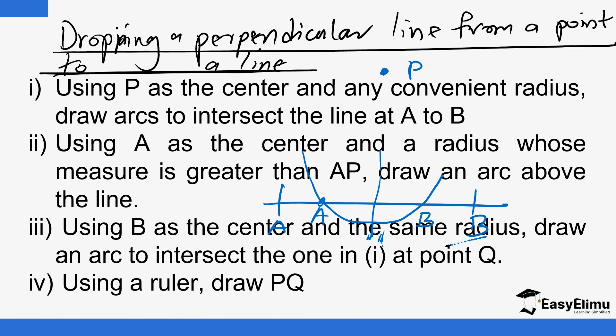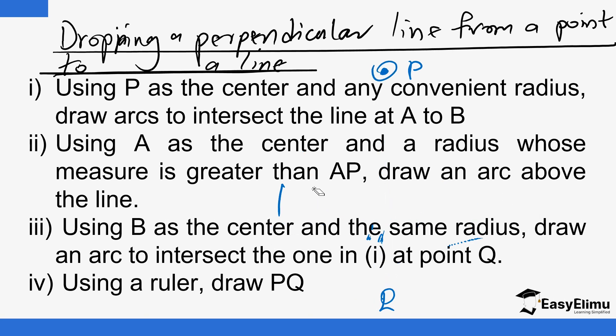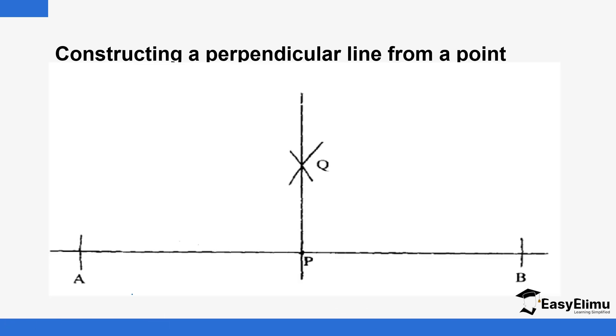Now using point A as the center, make an arc down here. Then using B as the center, make another arc to cut the first arc. Do not change the radius. The point of intersection of the two arcs — call it Q. Join P to Q, and that is how you drop a perpendicular from a given point to a given line. It's very easy, especially if you follow that procedure.